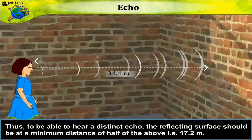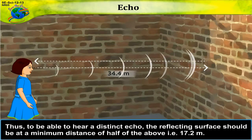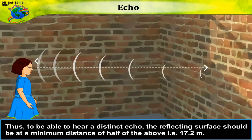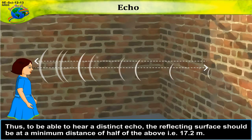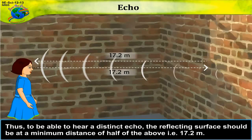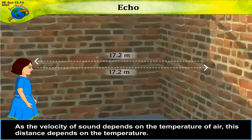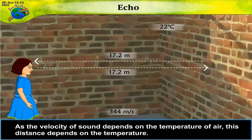Thus, to be able to hear a distinct echo, the reflecting surface should be at a minimum distance of half of the above, that is 17.2 meters. As the velocity of sound depends on the temperature of air, this distance also depends on the temperature.